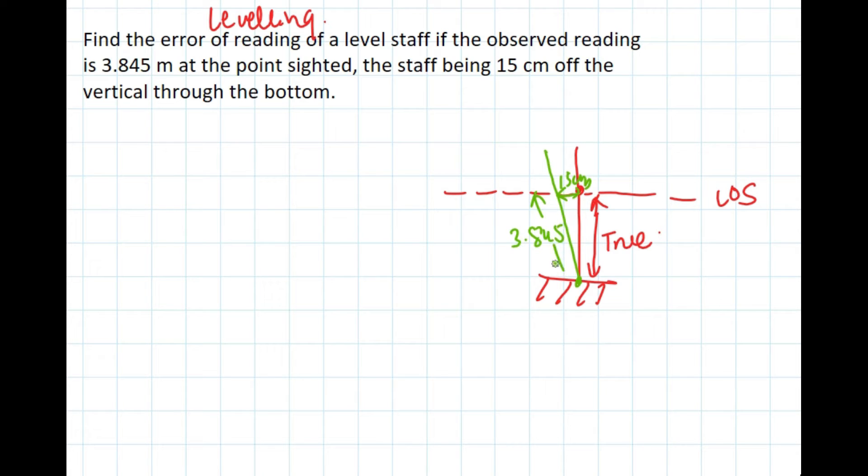If we simplify this figure, we get 0.15 meters. 15 centimeters is 0.15 meters. So 0.15, and then this is 3.845. And in this right angle triangle using Pythagorean theorem, we can find this value.